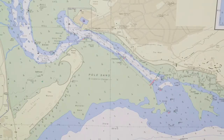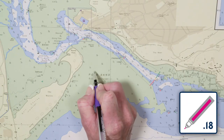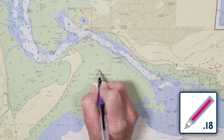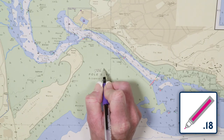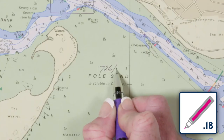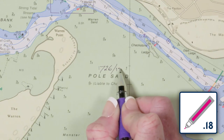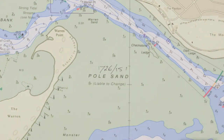Before applying the block to the chart, with a magenta pen, write the NM number onto the chart within the block area, in case the block peels off.